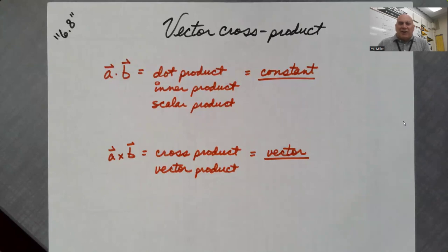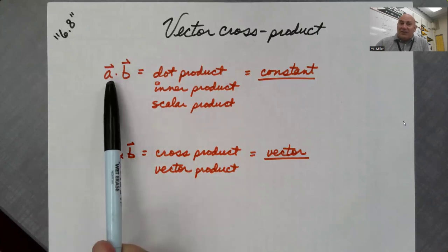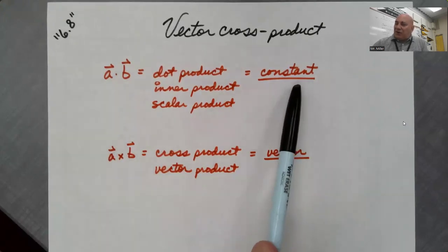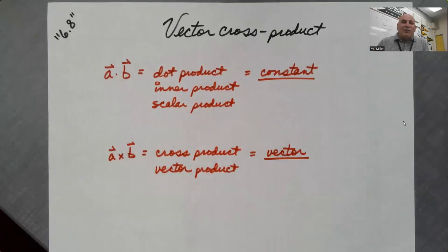And when we first introduced these vectors, I asked the question, what does it mean to multiply two vectors? I said, well, it doesn't really mean anything. There's two things that are kind of sort of multiplying. There's a dot product and a cross product. The dot product gives you a constant. The cross product gives you a third vector.